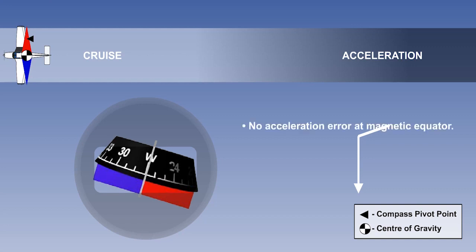It follows also that except for a small amount of liquid swirl effect in turns, there will be no acceleration errors at the magnetic equator because there is no magnetic dip at the magnetic equator. There will be no acceleration errors on north or south headings either, as on these headings, both the pivot point and the centre of gravity are in alignment with the aircraft's fore and aft axis.